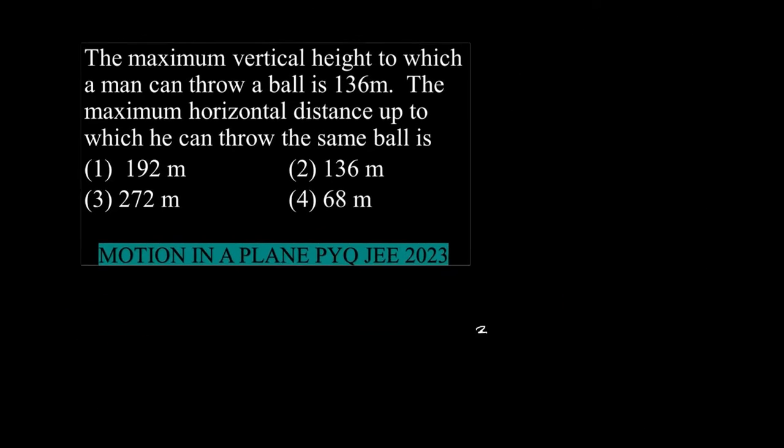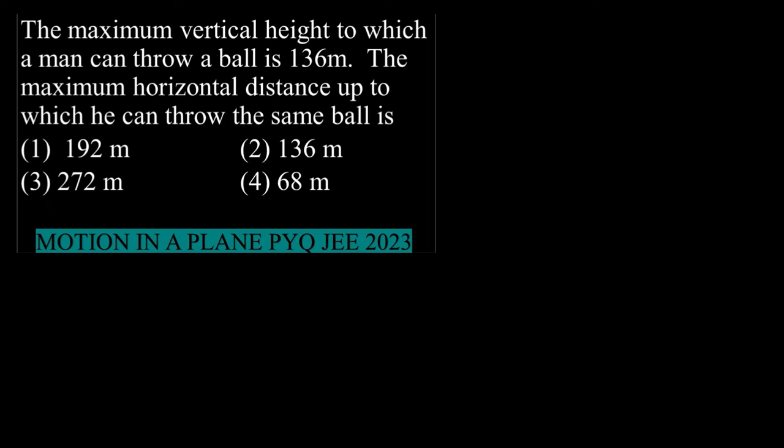Directly, it is 136 into 2, which is 272m. But let's understand which formula actually gives the answer directly. R_max is actually H_max times 2. But let us try to understand the mathematical part of this question.